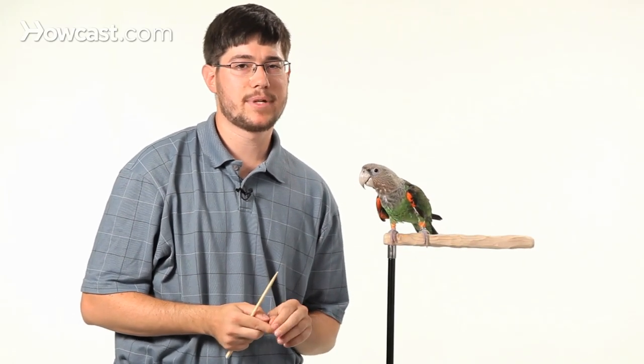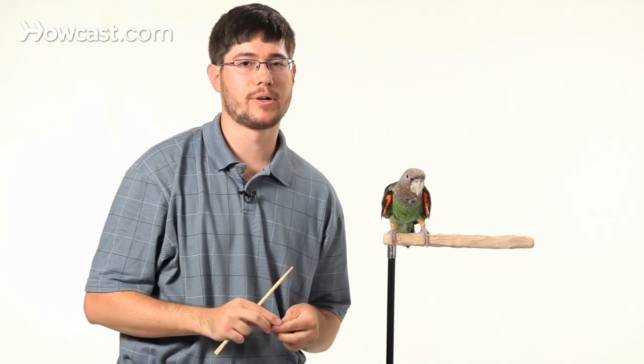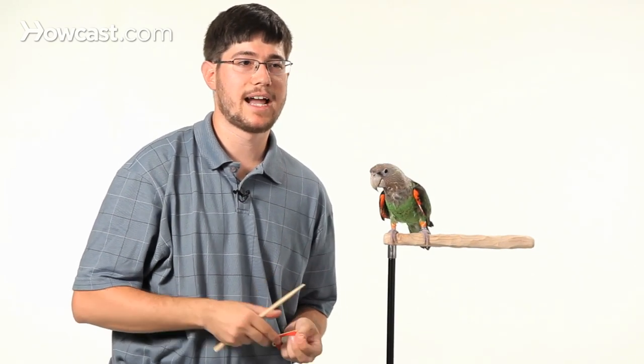And now that he's getting better at following the target stick, the next step is to start implementing your cue. So if you're going to tell your bird to spin or to turn around, now's a good time to start saying that instead of targeting, because he already knows to follow the stick.